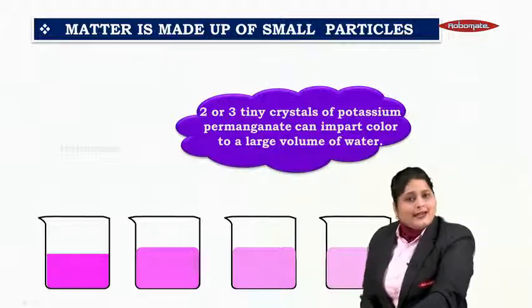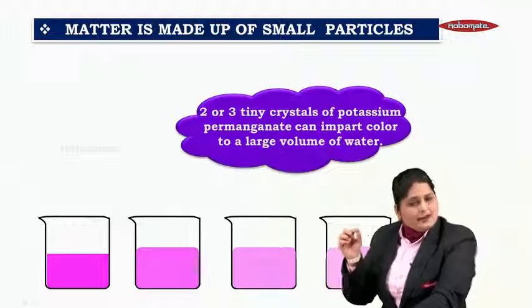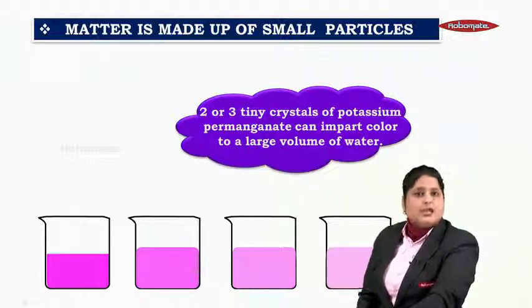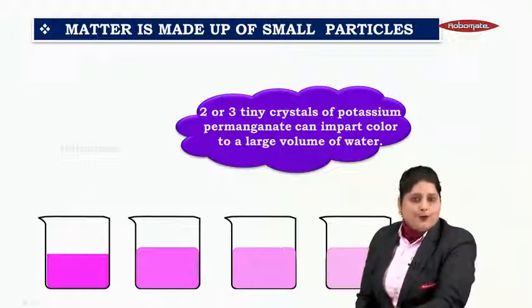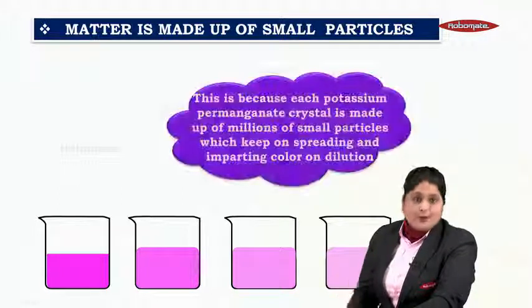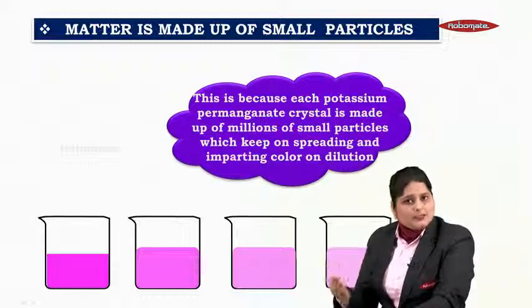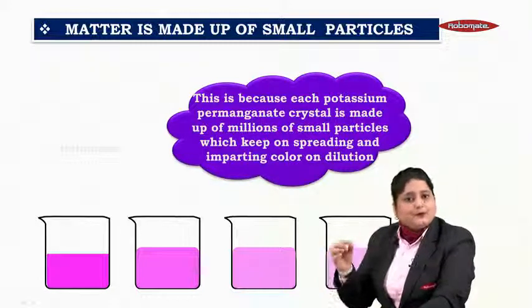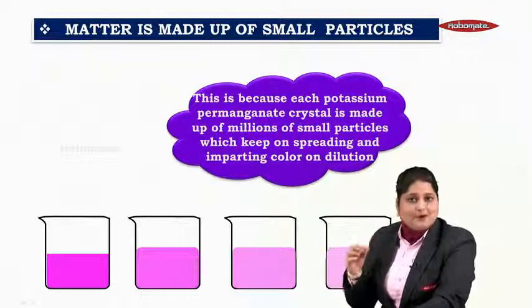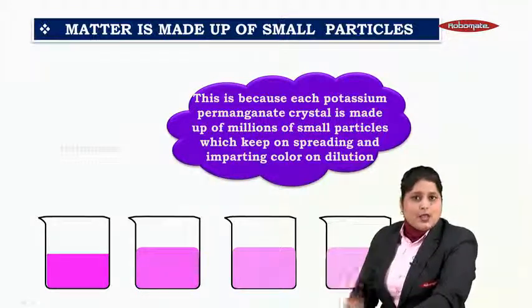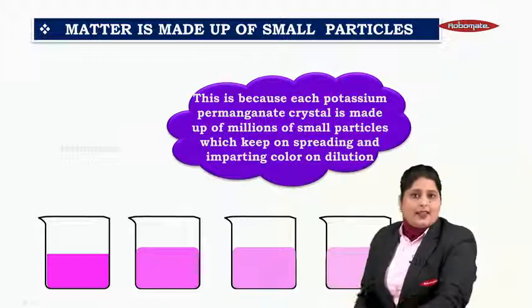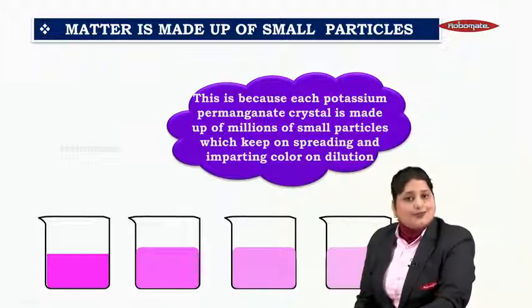Two or three tiny crystals of potassium permanganate can impart color to a large volume of water. This is because each potassium permanganate crystal is made up of millions of small, small particles which keep spreading and imparting color on dilution.